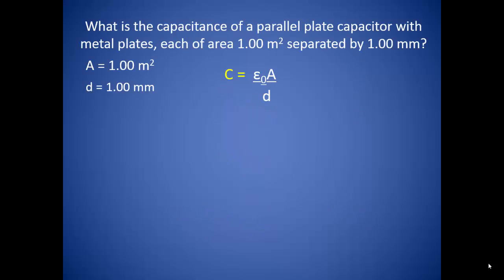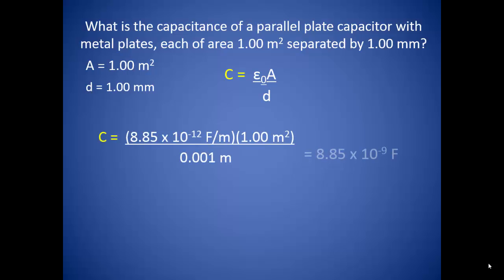Starting out simply: what is the capacitance of a parallel plate capacitor with metal plates, each of area one meter squared, separated by one millimeter? We know the area and the distance between them. The only tricky part is to change millimeters to meters, and we find a capacitance of 8.85 times 10 to the negative 9th farads. This is a really small capacitance. The plates are one meter in area, which is pretty large, and the distance between them is only one millimeter. Think about how you would build something with that large a plate and keep those plates only one millimeter apart.